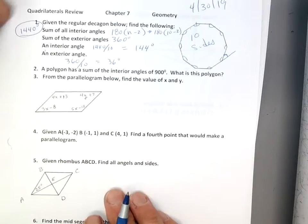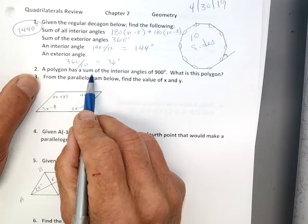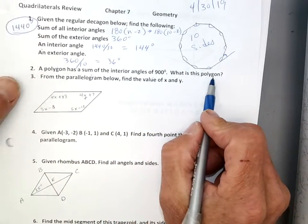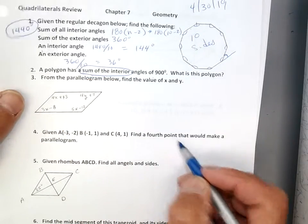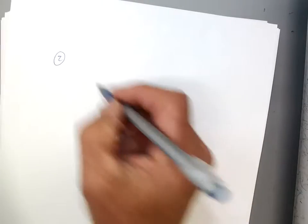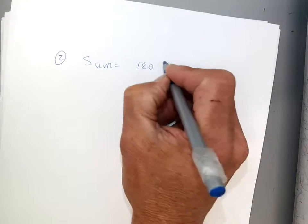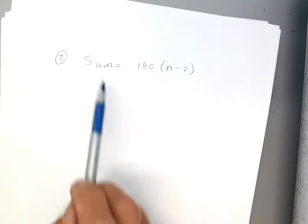Okay, number two, a polygon, I might have to do this on a separate sheet of paper because I'm not going to have room, has a sum of the interior angles of 900 degrees. What is this polygon? Well, sum of interior, okay? So, I have a formula. It's in my notes.